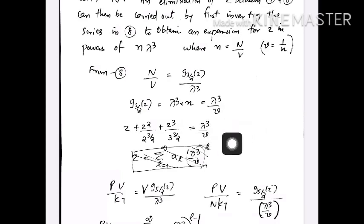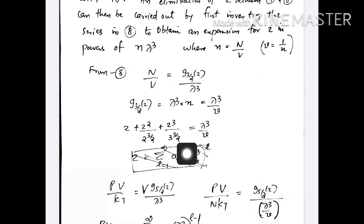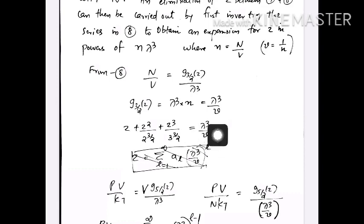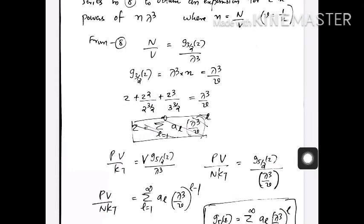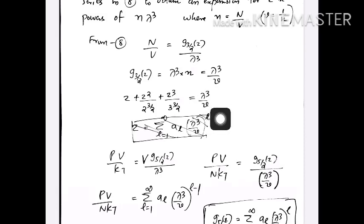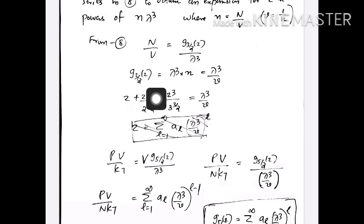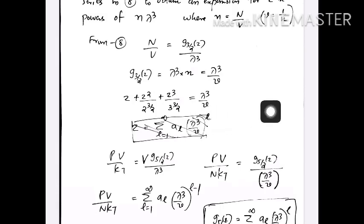So g_{3/2}(z) equals lambda^3/v. We know the Bose-Einstein function can be expanded as a series in z: z plus z^2/2^(3/2) plus z^3/3^(3/2) and so on as an infinite series, and this equals lambda^3/v. Now we invert this series, writing z in terms of a series in lambda^3/v.